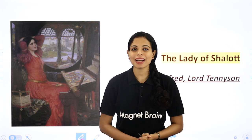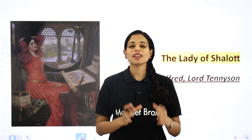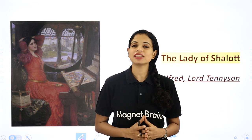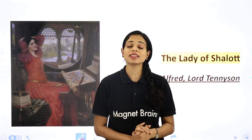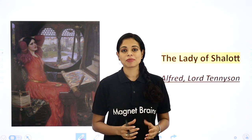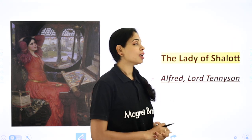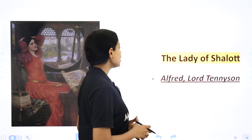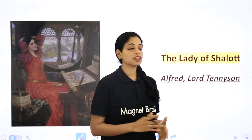Hello everyone, welcome back to Magnet Friends. I am Swati, your English educator. Today we are going to read a very interesting poem from our book Engaging English for class 7, chapter number 6. This chapter is actually a poem — its name is The Lady of Shalott.